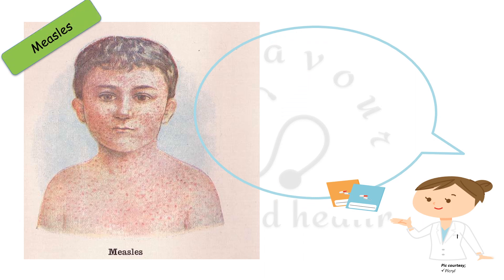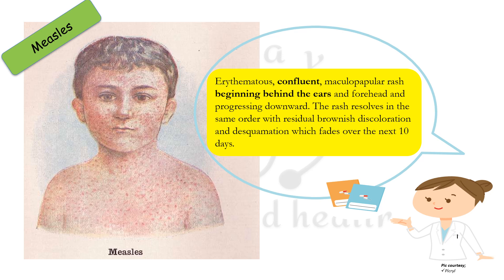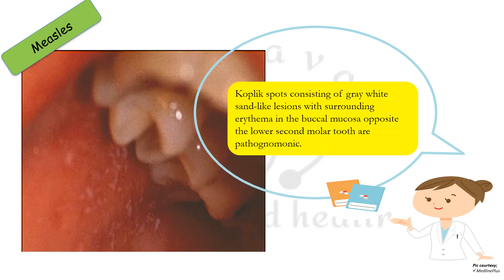In measles, the rash is erythematous and confluent, meaning the lesions generally stick to each other. Maculopapular rash begins behind the ears and forehead and progresses downward. The rash resolves in the same order with residual brownish discoloration and desquamation, fading over the next 7 to 10 days. Koplik spots, pathognomonic of measles, consist of grey-white sand-like lesions with surrounding erythema, seen in the buccal mucosa opposite the lower second molar tooth.